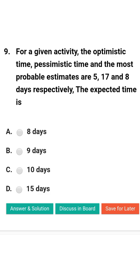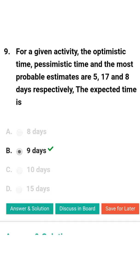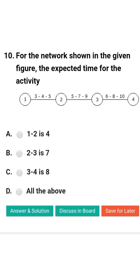Next question: For a given activity, the optimistic time, pessimistic time, and most likely time estimates are 5, 17, and 8 days respectively. The expected time is — option A: 8 days; option B: 9 days; option C: 10 days; option D: 15 days. The correct answer is option B: 9 days.